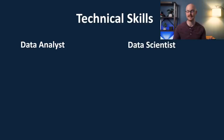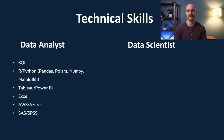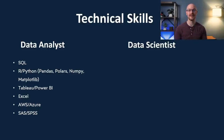Now let's move on to technical skills, starting with the data analyst. Some of the technical skills a data analyst is going to work with are SQL, R, and Python. Within Python, some popular libraries include pandas, polars, numpy, and matplotlib, as well as many others. We'll also use data visualization tools like Tableau and Power BI, of course Excel, a cloud platform like AWS or Azure, and some type of statistical tool like SAS or SPSS. These are just some of the more popular skills — there are thousands out there.